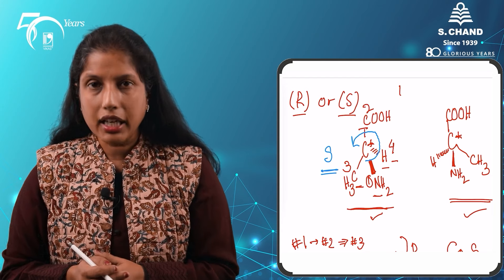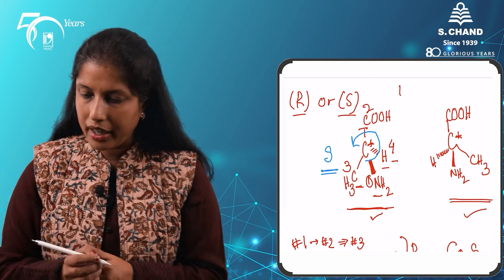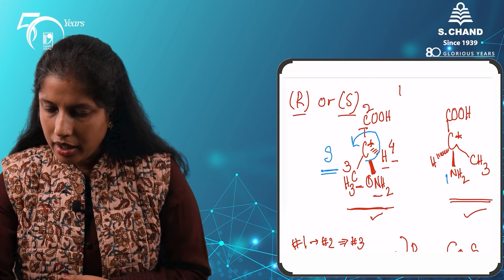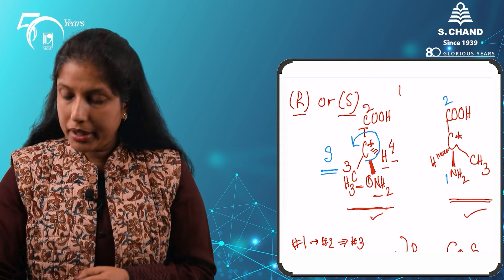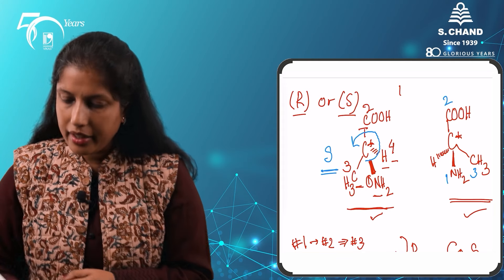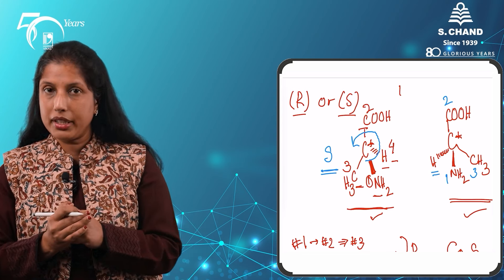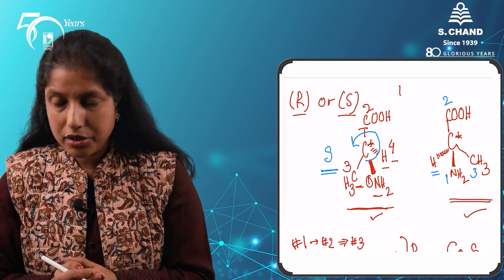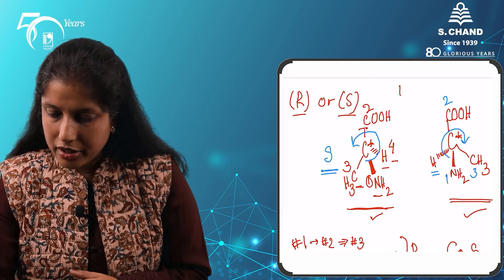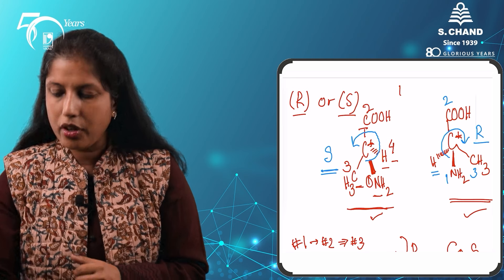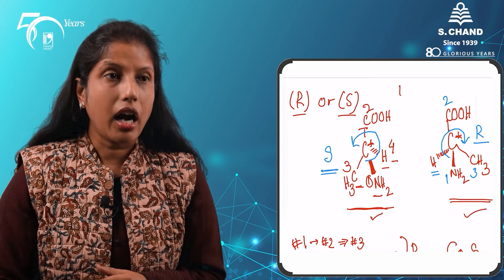Now let's look at our unnatural alanine. Same thing — we write the priority groups. Nitrogen is 1, carbon of the carboxylic acid is 2, carbon of the methyl group is 3, and our lowest priority group, hydrogen, is already away from us at the back. Now let's trace the path going from 1, 2 and 3. We have gone in the clockwise direction, making this our R configuration.